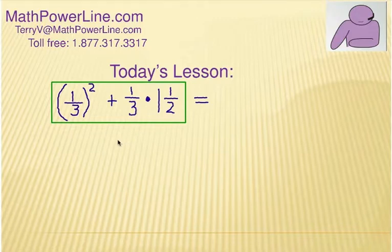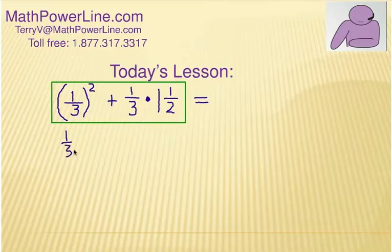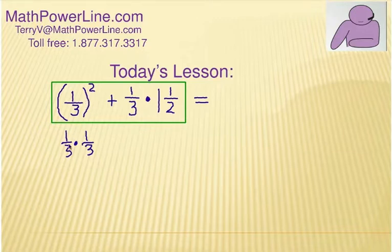So how do you handle that? What do you do first? Well, the first thing we want to look at is one-third squared. What does that really mean? In any exponent it means repeated multiplication. So you're going to take the fraction one-third and multiply it by itself twice — that's what the two means. So it's one-third times one-third.